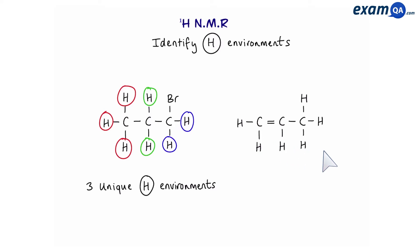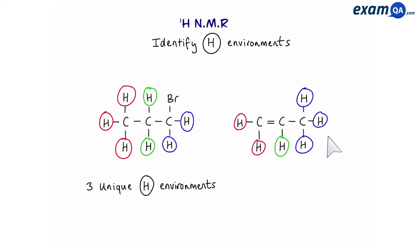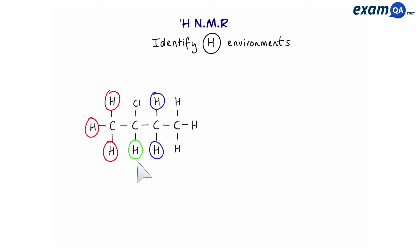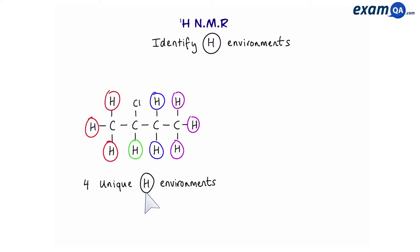Let's move on to another example. These two protons are one environment. We have one here and three there, so again in total there are three unique proton environments in this molecule. Moving on to another example: three protons there, one proton here, two protons there, and these three protons make the final environment. So in total we have four unique hydrogen or proton environments in this molecule.